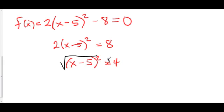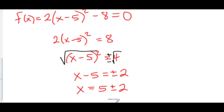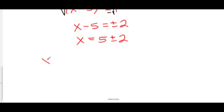And of course, we have to remember to put a plus or minus in front of the square root on the right-hand side. So we have x minus 5 is equal to plus or minus the square root of 4, which is just 2. So x equals 5 plus or minus 2. This means that the zeros of this function are at x equal 5 minus 2 gives us 3. And 5 plus 2 gives us 7.